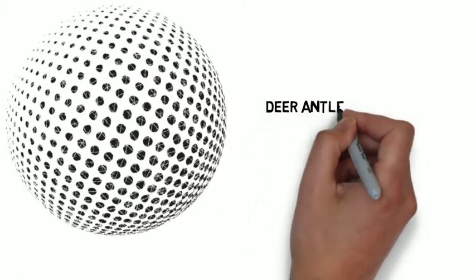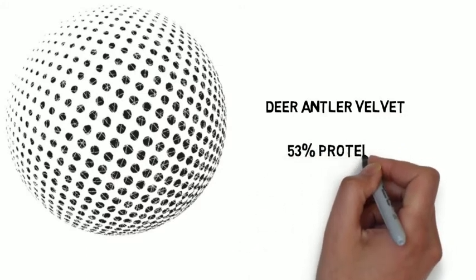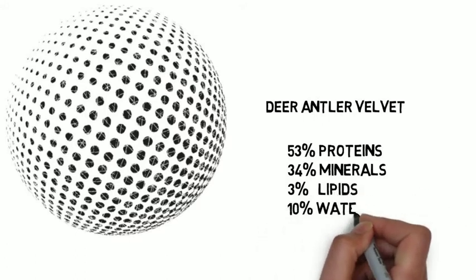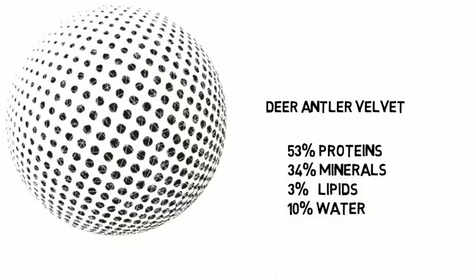Deer antler velvet is composed of approximately 53% proteins, 34% minerals, 3% lipids and 10% water. However, the concentration of nutrients varies from the bottom of the antler to the top.